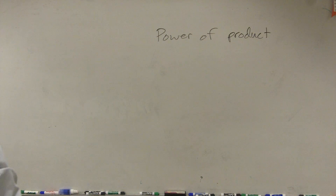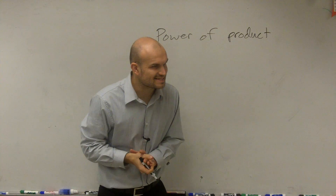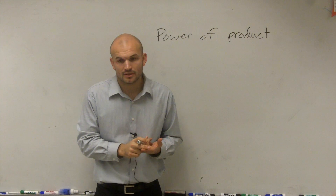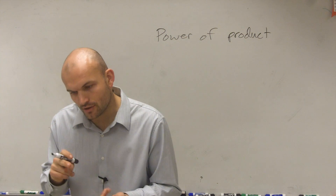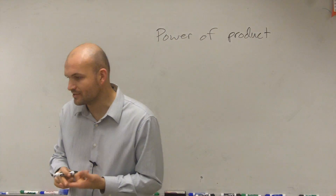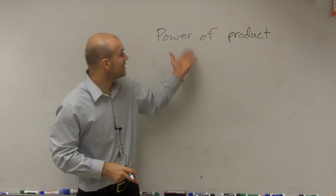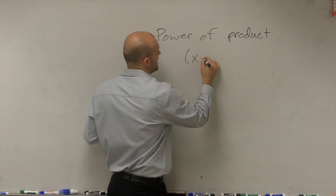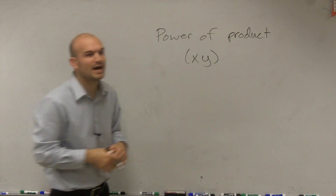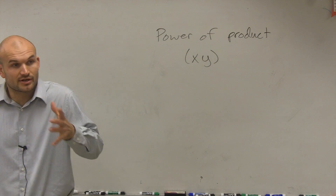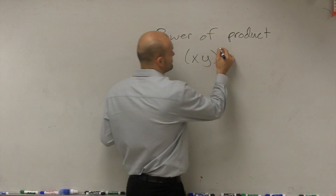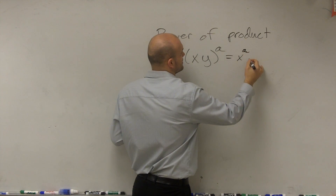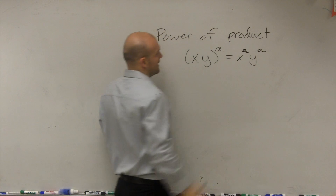So, power of products. We've talked about the product of powers, and the power of a power. Now we're talking about the power of a product. What that simply states is: if you have x times y — a product — raised to an exponent a, that means you're going to have x to the a times y to the a.